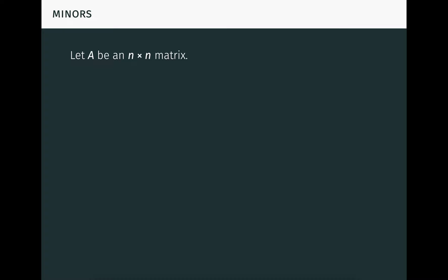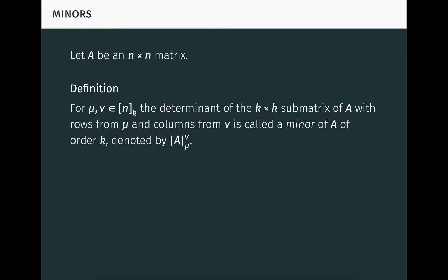Finally, mu bar denotes the complement of mu in n, which lives in n n minus k, and is of course also ordered naturally. Now let A be an n by n matrix. As before, to keep things simple, we assume the entries of A come from a field of characteristic zero, like the real or complex numbers. For sets mu and nu in nk, the determinant of the k by k submatrix of A, with rows indexed by the numbers in mu and columns indexed by the numbers in nu, is called a minor of A of order k, denoted with vertical bars like this. I read this as det A mu nu. Note that every kth order minor of A is of this form for some mu and nu in nk. As an example, we compute a second order minor of a 3 by 3 matrix. Be sure to pause the video and make sure you understand this example.